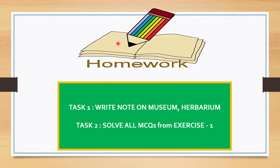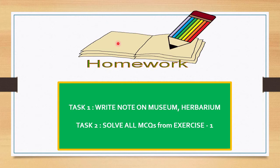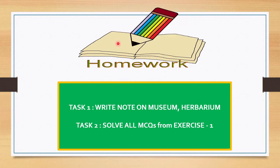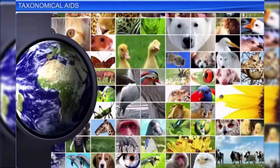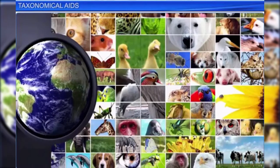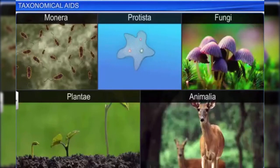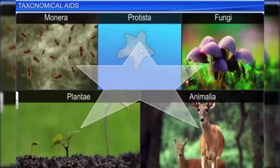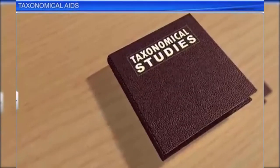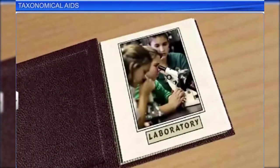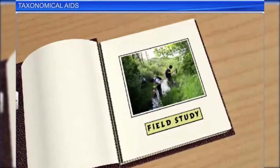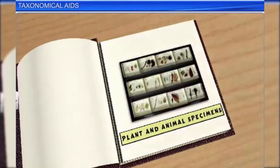Today's homework is to solve all MCQs from Exercise 1. Now let's summarize with an animation video. Our planet is filled with numerous living organisms. To simplify their study, organisms are classified into convenient categories based on their characteristics — a process known as taxonomy. Taxonomic studies require careful identification through laboratory and field studies and collection of actual specimens.